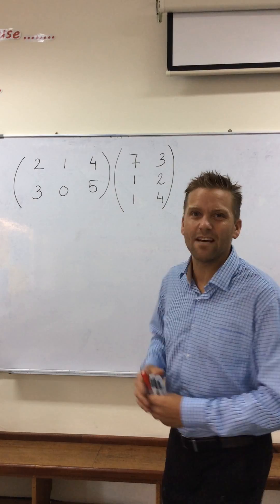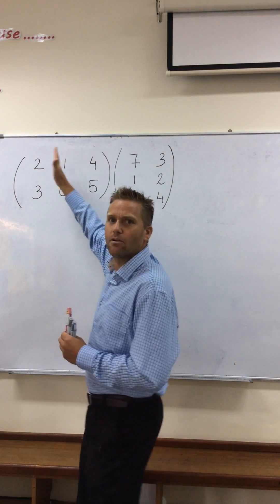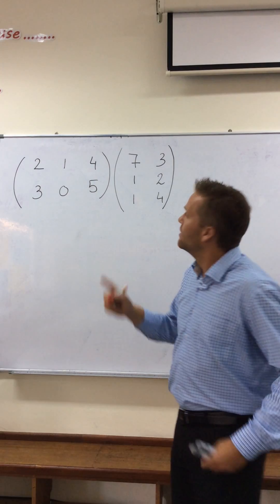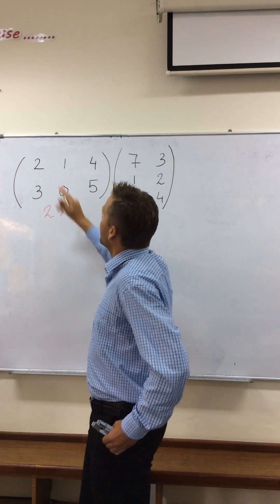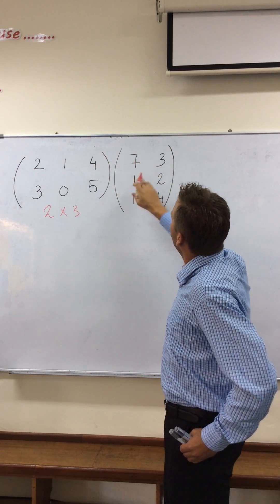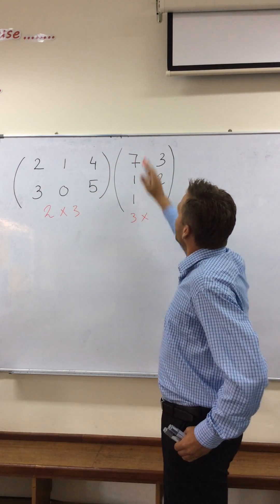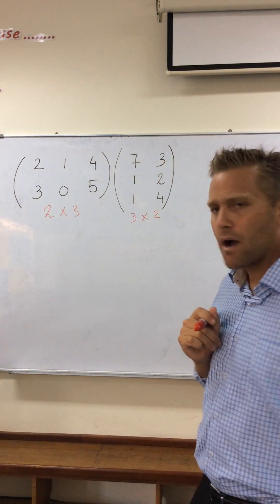Before we start, you always have a look at the order of the matrix. How many rows and how many columns does each matrix have? So I'm going to write down, I have two rows by three columns for my first matrix and my second matrix has three rows by two columns. So it's a two by three matrix multiplied by three by two.